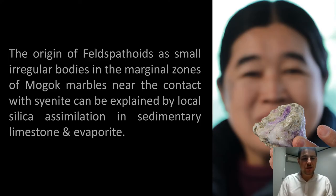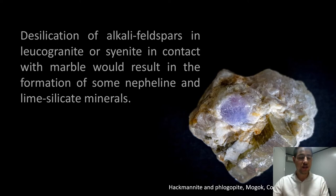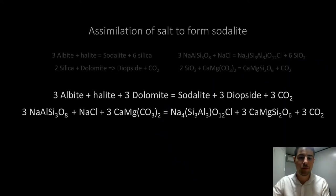The origin of the feldspathoids as small irregular bodies in the marginal zone of Mogok marbles near the contact with syenite is explained by the local silica assimilation in sedimentary limestone and evaporite into the original melt. Desilication of the alkalized feldspathoids in leucogranite or syenite in contact with the marble can result in nepheline and the lime silicate minerals presented before. That's how you form sodalite, which is the hackmanite, going and meeting the halite and the dolomite, generating CO2 and the side-product diopside.